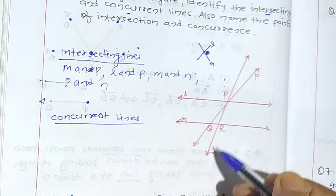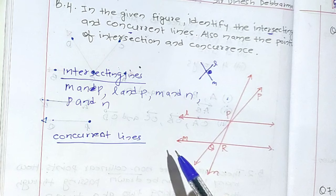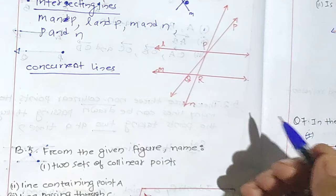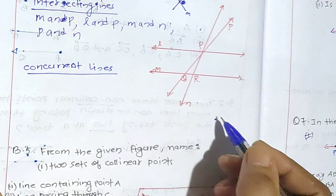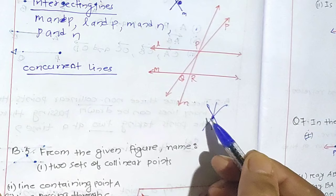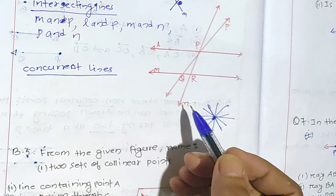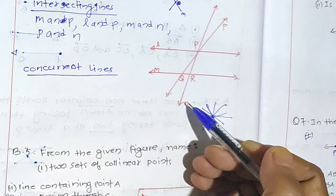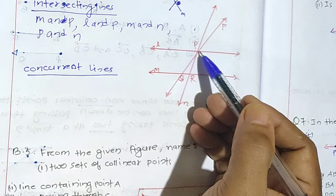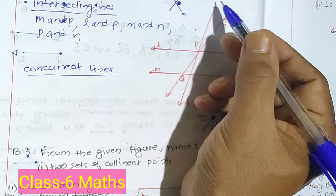Intersecting lines are now clear. Now we have concurrent lines. Concurrent lines will have three or more lines but with a common point. Like here — through this common point, three or more lines will pass through. So that is called concurrent lines. Over here, p, l, and n are intersecting at a common point. Through this common point, at least three lines pass — l, m, and n are all passing through this common point.